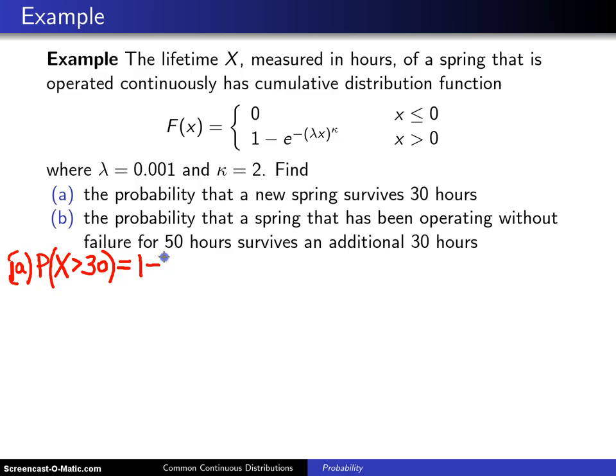This can be written as 1 minus the probability x is less than or equal to 30, and you may recognize that the probability x being less than or equal to something is the same as 1 minus capital F of 30. And 1 minus capital F of x is just going to leave you with e to the minus lambda x to the kappa.